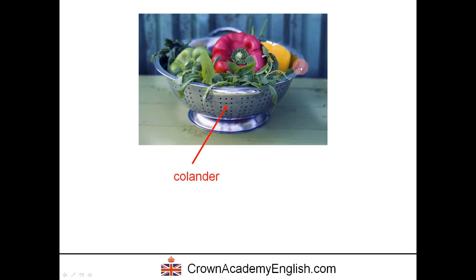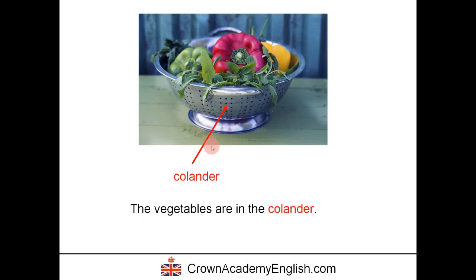This metal thing is called a colander — it is a metal bowl with holes in it. The holes allow water to pass through. The vegetables are in the colander. We often use a colander to wash vegetables — we put vegetables in it, wash them with water, and the water passes through the holes while the vegetables stay inside.